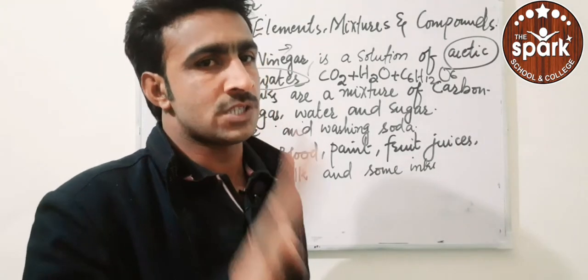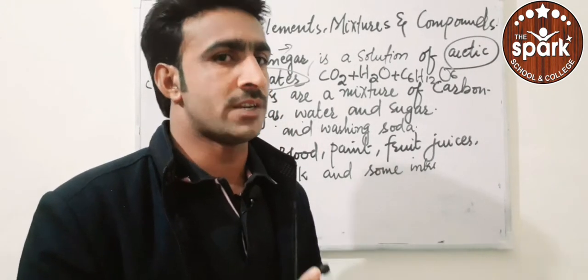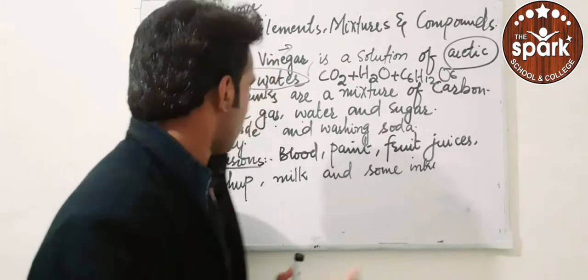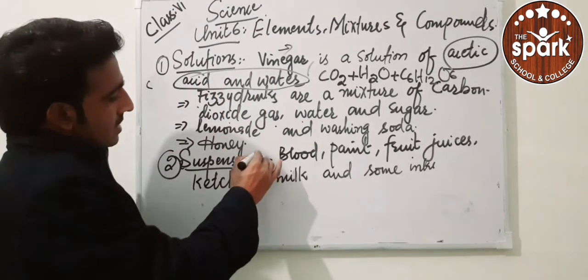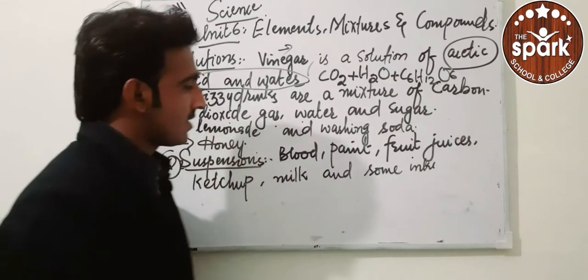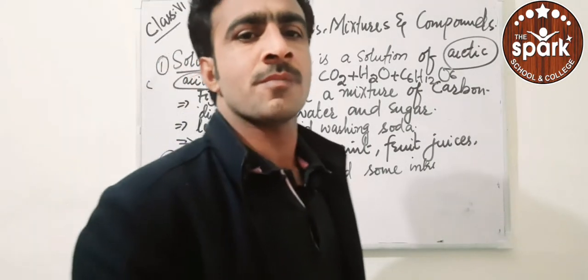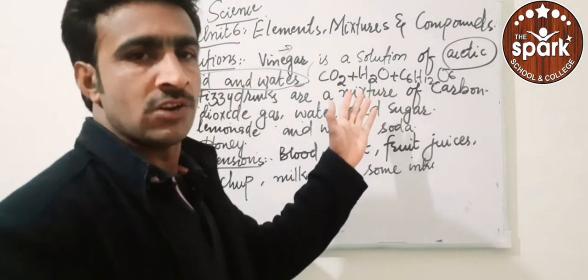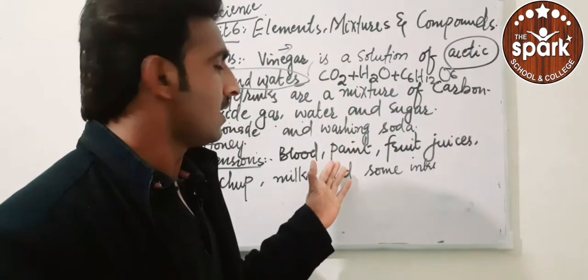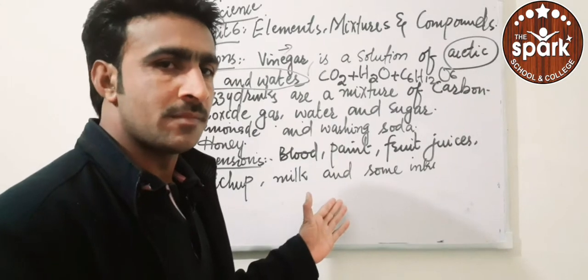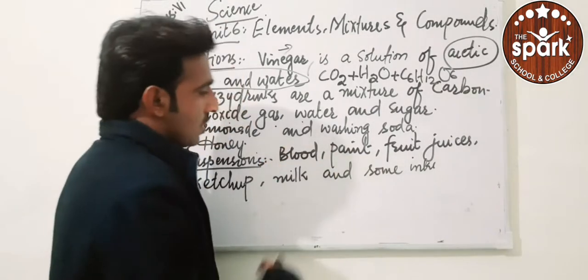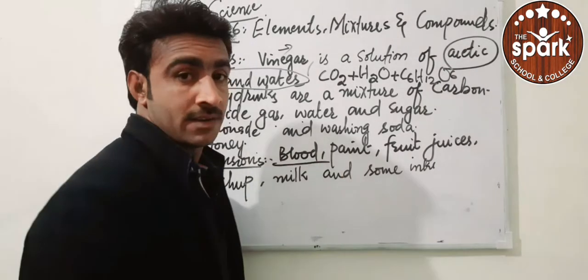Then the next one is suspension. What is suspension? Suspension is that concentrated material, whereas the previous was dilute material. This is concentrated solutions or concentrated mixtures. This is like paints - paint is constantly used.